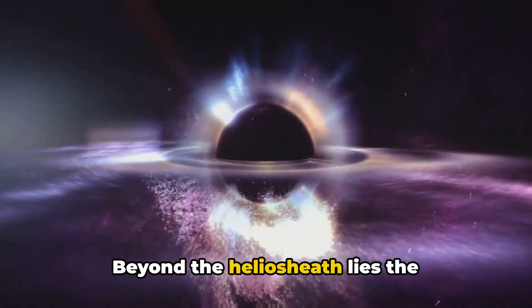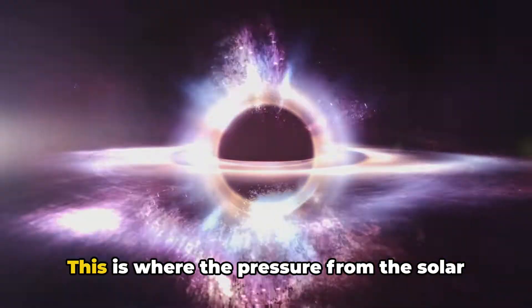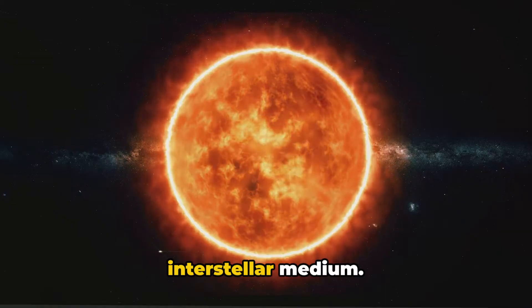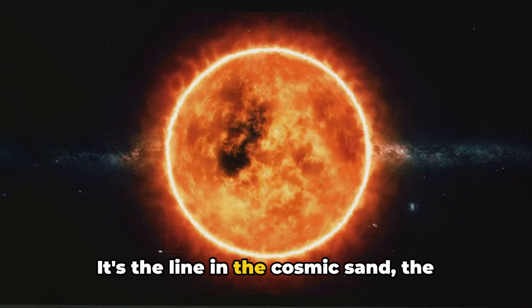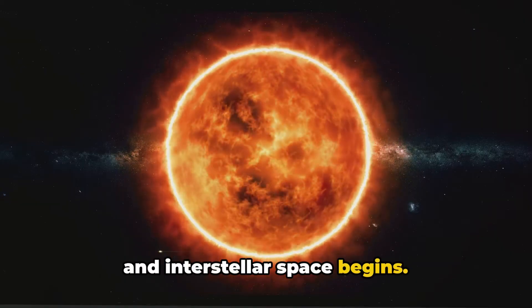Beyond the heliosheath lies the heliopause, the outermost boundary of the heliosphere. This is where the pressure from the solar wind balances with the pressure from the interstellar medium. It's the line in the cosmic sand, the frontier where the sun's influence ends and interstellar space begins.